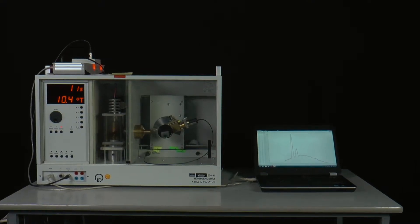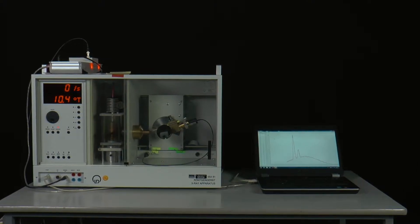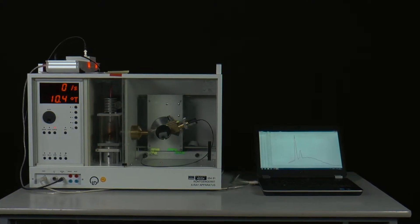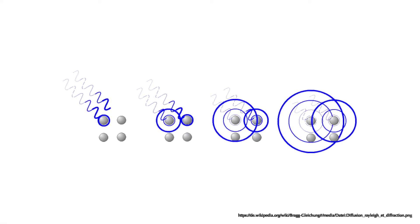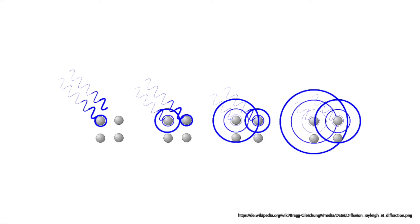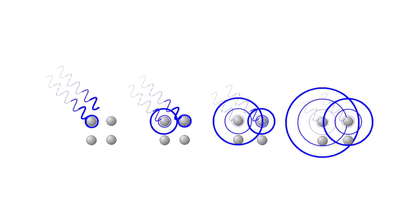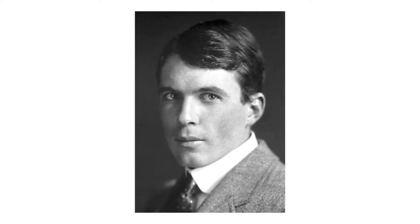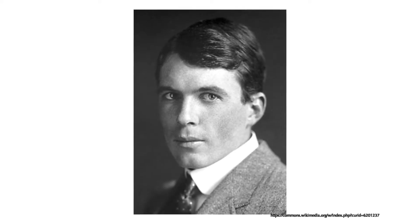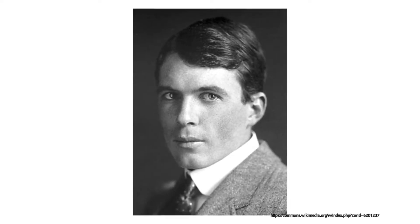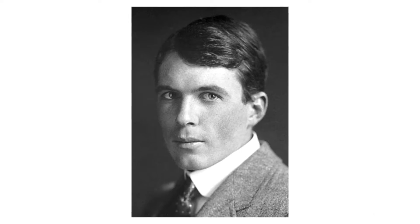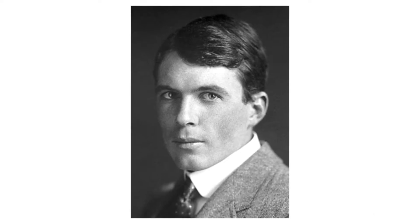Bragg reflection. When x-rays hit a three-dimensional crystal lattice they are diffracted. In certain directions there are intensity minima, in others intensity maxima. William Lawrence Bragg succeeded in 1912 to explain this phenomenon in the wave picture of light and to formulate the so-called Bragg condition.